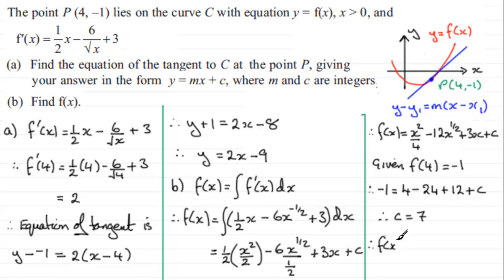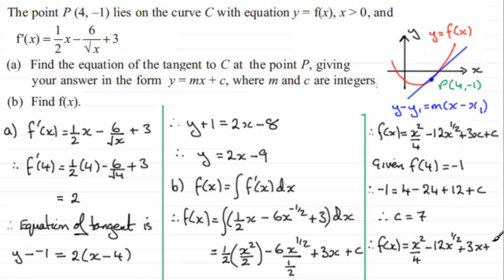Therefore f(x) = x²/4 - 12x^(½) + 3x + 7. There's f(x), and I hope that's given you some idea if you had any problems with that particular question.